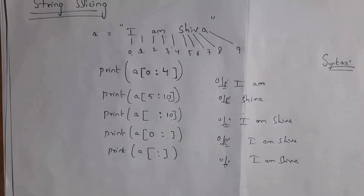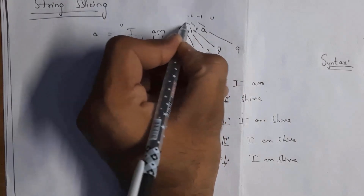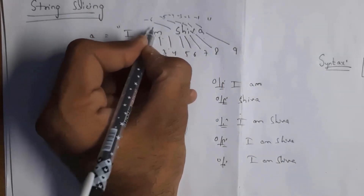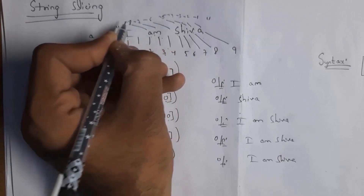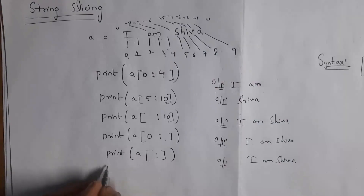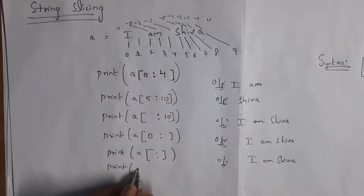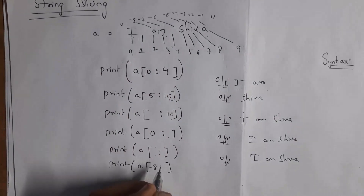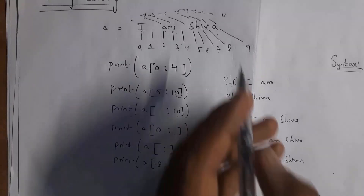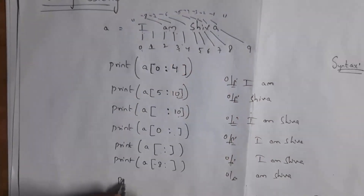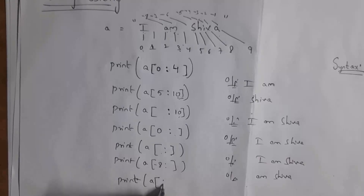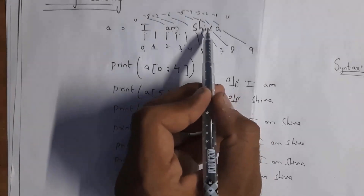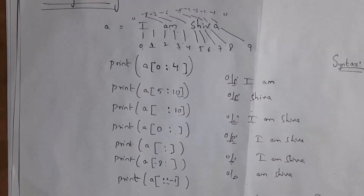You can also give negative index numbers. A is stored at index -1, V at -2, I at -3, H at -4, S at -5, space at -6, M at -7, and A at -8. So if you want to print 'am Shiva', write print a[-8:] — starting at -8 and without an end index it will print till the end, giving output 'am Shiva'. If you want to print the string in reverse order, write print a[::-1], which will print the string in reverse order.